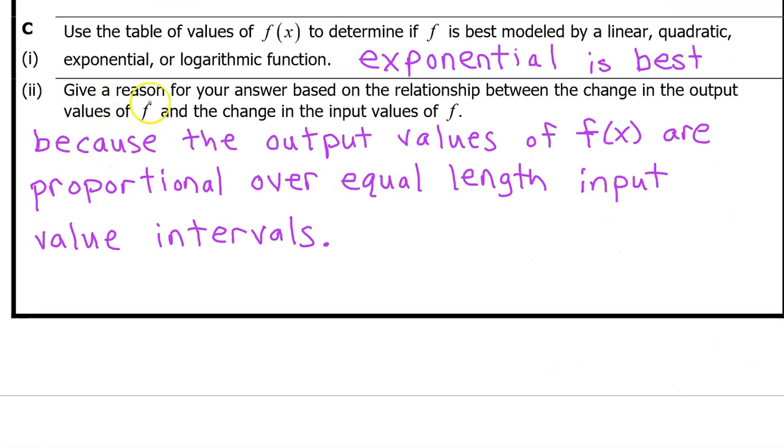C part 2 says give a reason for your answer based on the relationship between the change in the output values of f and the change in the input values of f. So we can answer C part 1 and part 2 at the same time. We say exponential is best because the output values of f of x are proportional over equal length input value intervals.